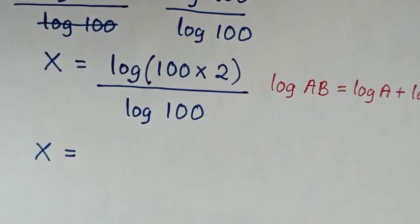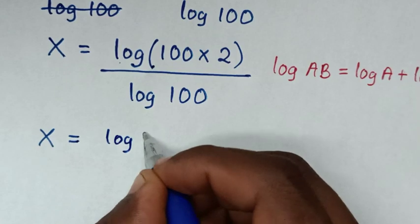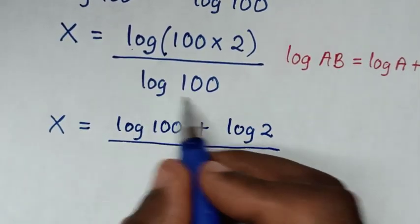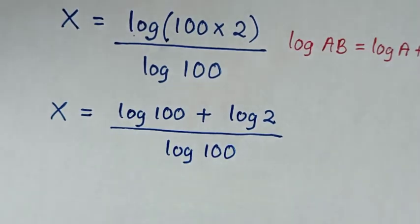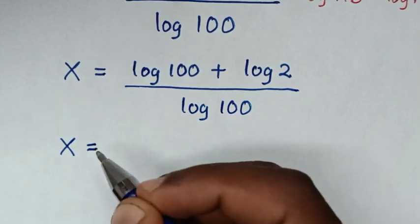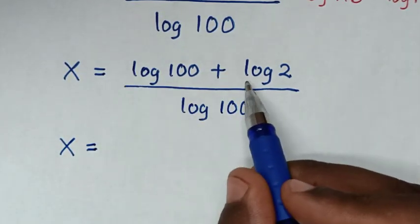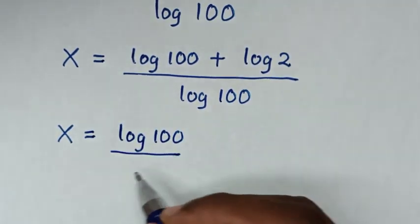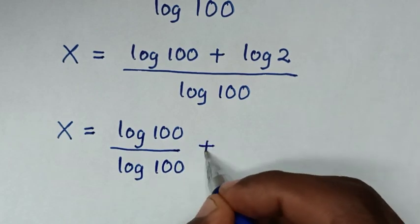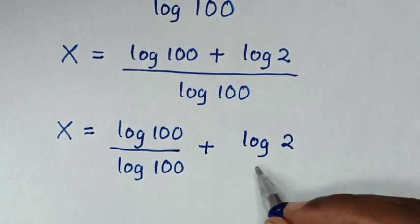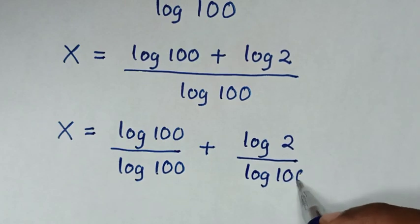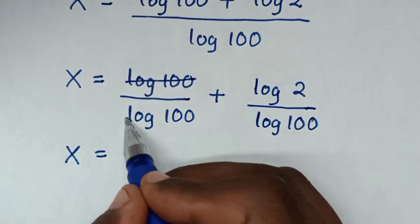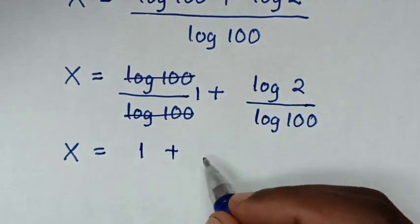Then in the next step, our equation becomes x is equal to (log of 100 plus log of 2) over log of 100. We distribute the denominator into each part: log of 100 over log of 100, plus log of 2 over log of 100. Simplifying, log of 100 divided by log of 100 is 1. So it will be 1 plus log of 2 over log of 100.